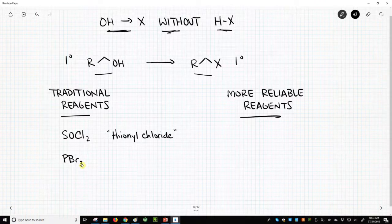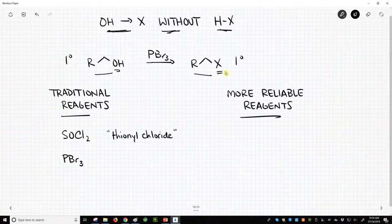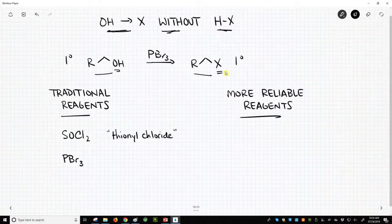If you're going to use one of these reagents, you just write it over the arrow. PBr3 converts your alcohol to a halide and, of course, not any halide X, but specifically to a bromide if you're using PBr3.